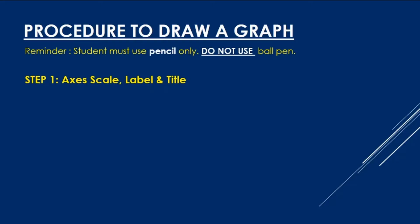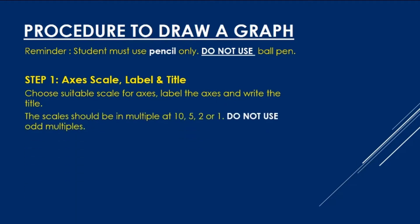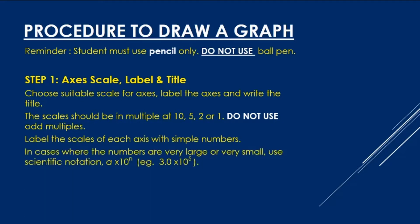Step 1: Axis scale, label and title. Choose suitable scale for axes, label the axes and write the title. The scale should be in multiples of 10, 5, 2, or 1. Do not use odd multiples, for example like 3 or 9. Label the scales of each axis with simple numbers. In cases where the numbers are very large or very small, use scientific notation, for example 3.0 times 10 power of 5.